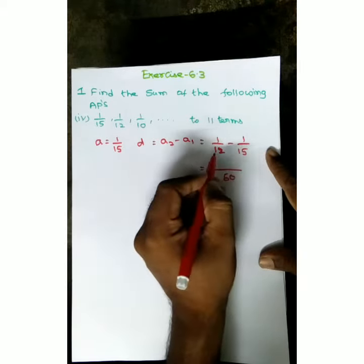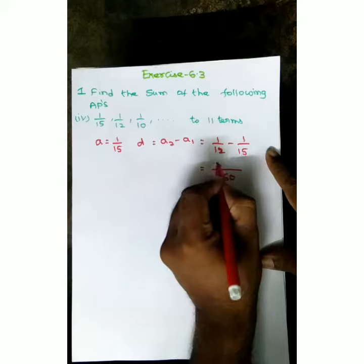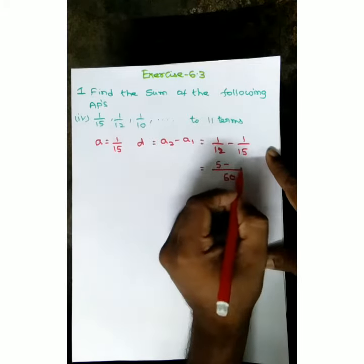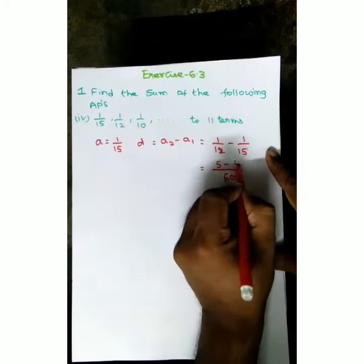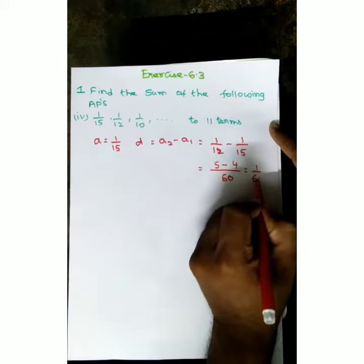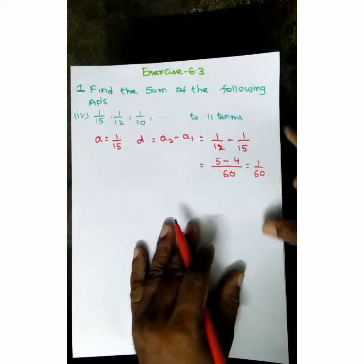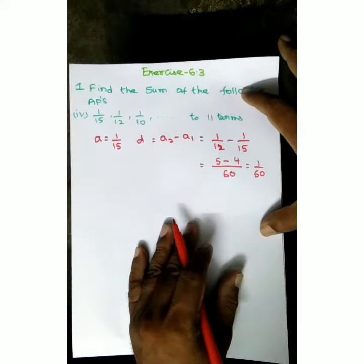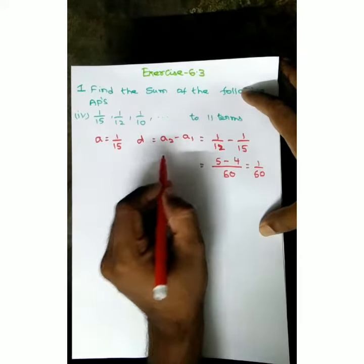15 into 4 is 60, 5 minus 4 is 1. So 1 by 60. The D value is 1 by 60.